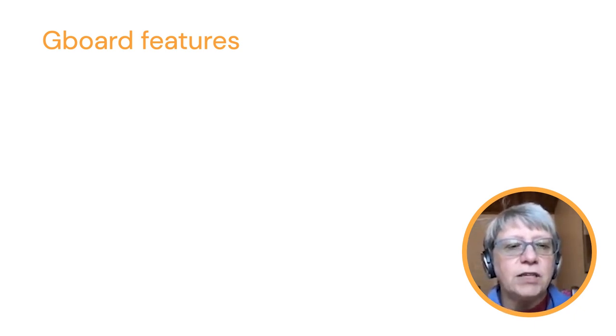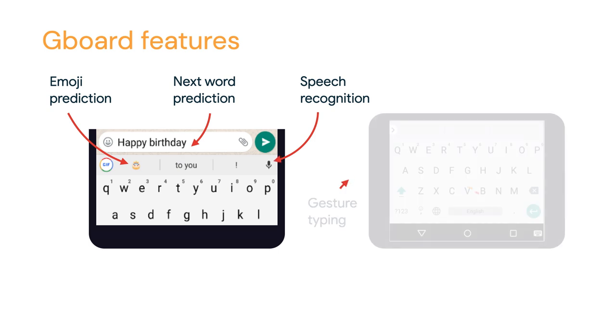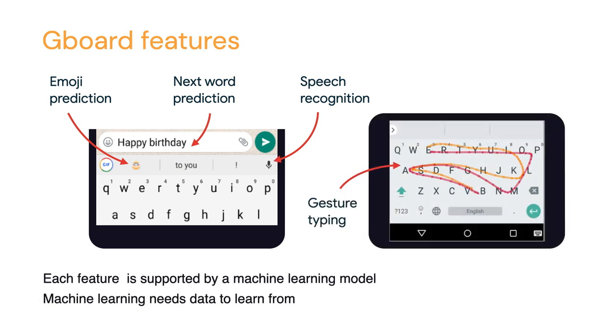Next-word prediction is one feature that Gboard has, but it's not the only one. The keyboard can also offer emoji prediction, speech recognition, and gesture typing. Each one of these functionalities is supported by a machine learning model, and of course that model needs data to be refined.